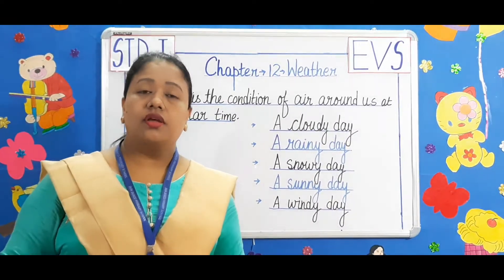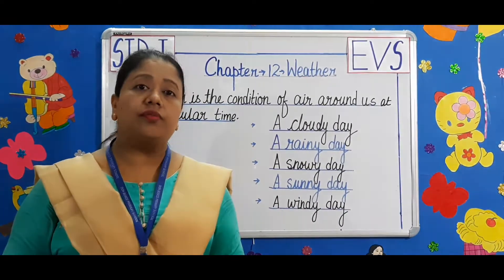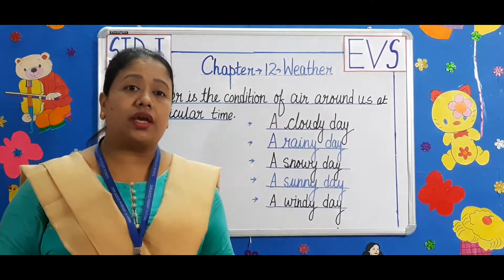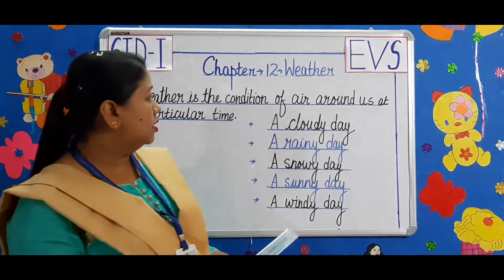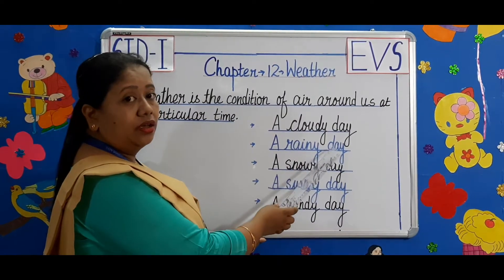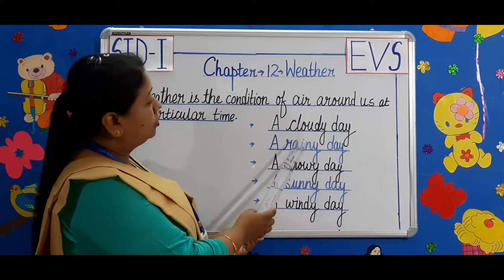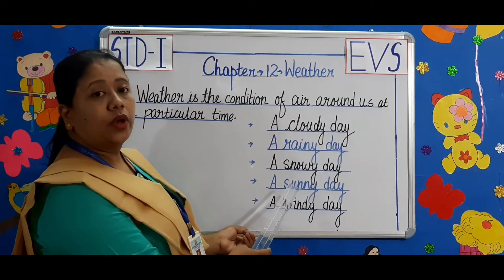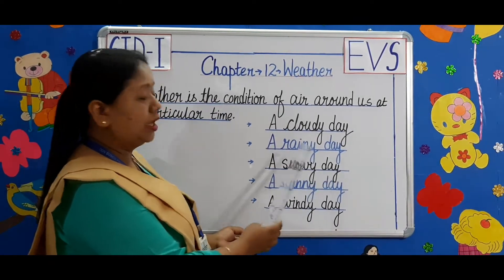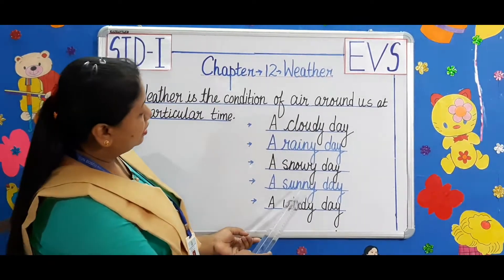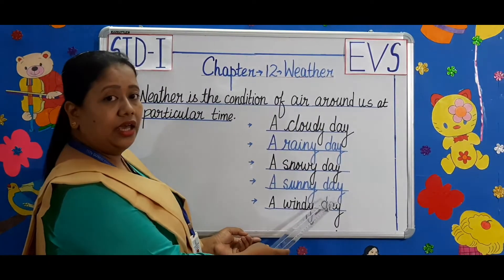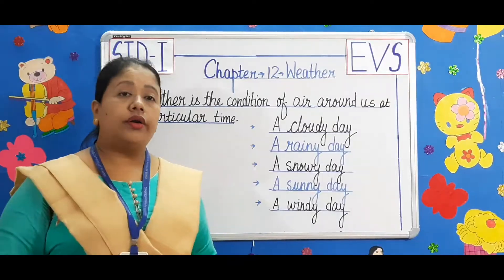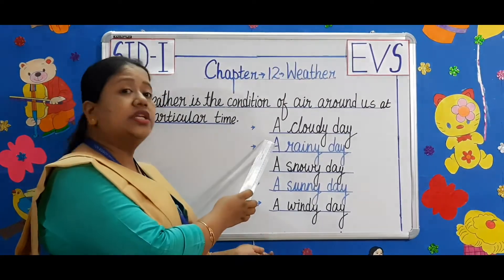Weather changes from time to time and day to day. There are different types of weather days: a cloudy day, a rainy day, a snowy day, a sunny day, and a windy day.